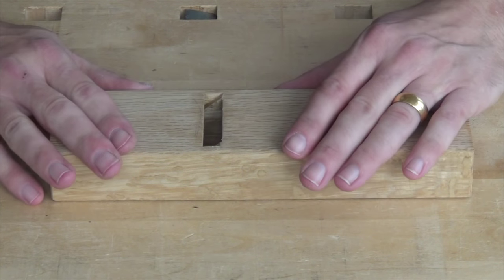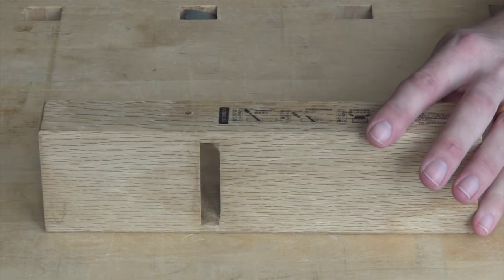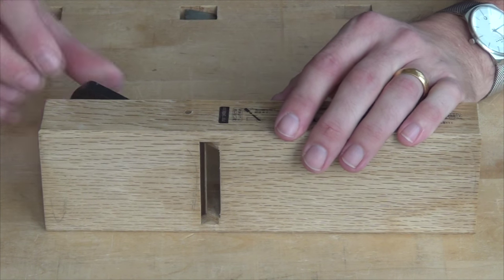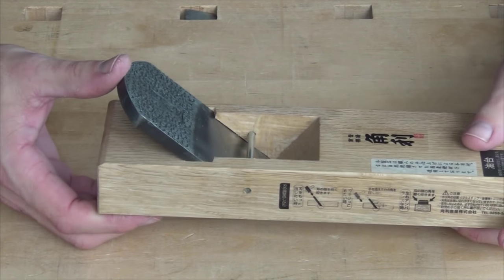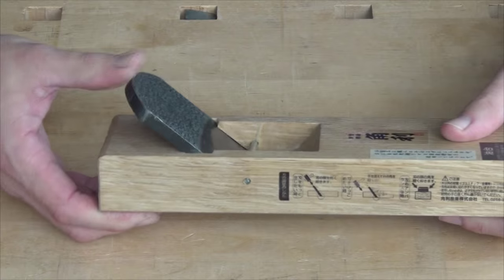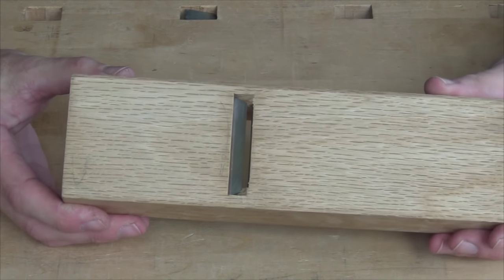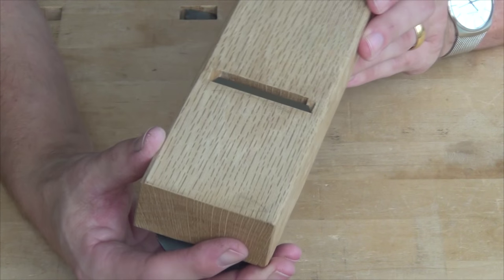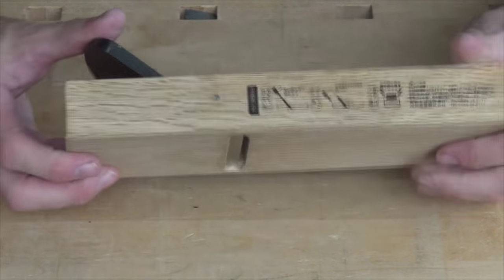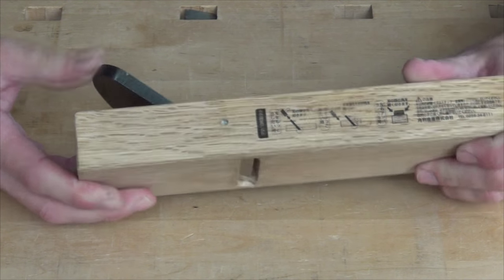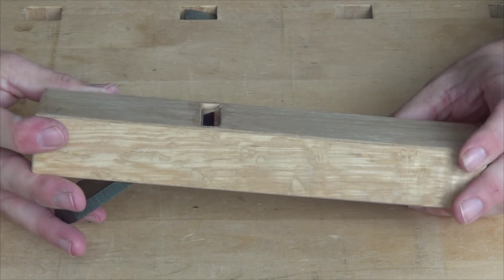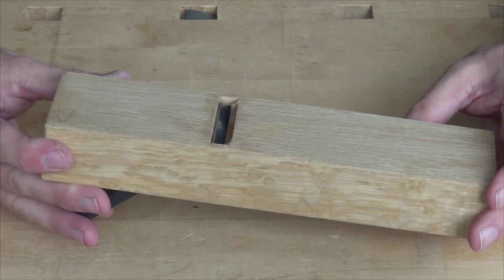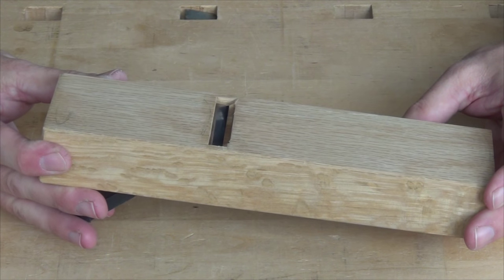So turning our attention back to the body of the plane, we can now insert our iron. And just with thumb pressure, push that down into the plane, check underneath and see how close we're getting to the mouth. And you can see we're still quite a ways away. Now I could probably pound that with a hammer to get it to come down right to the front of the mouth. But that's not what we want. We want to be able to push it almost to the edge with good thumb pressure.